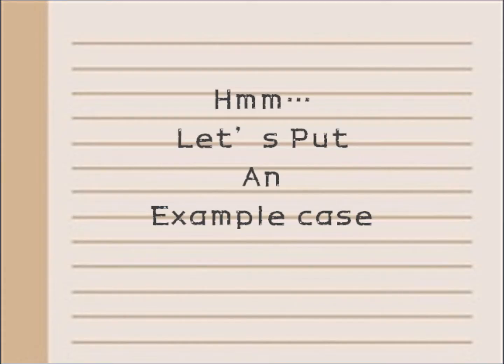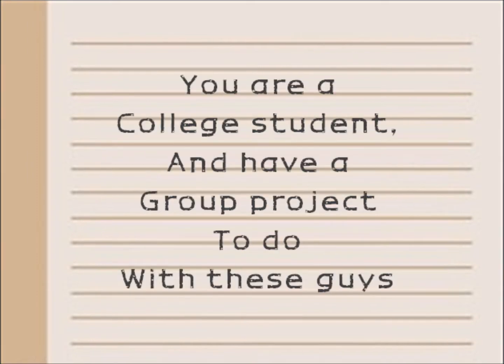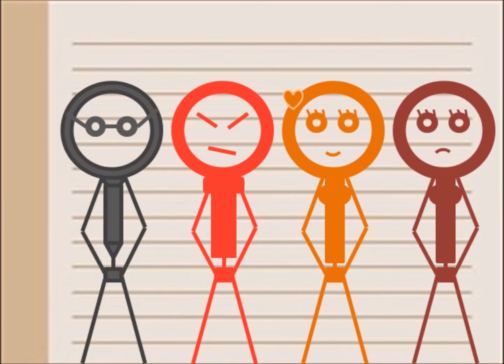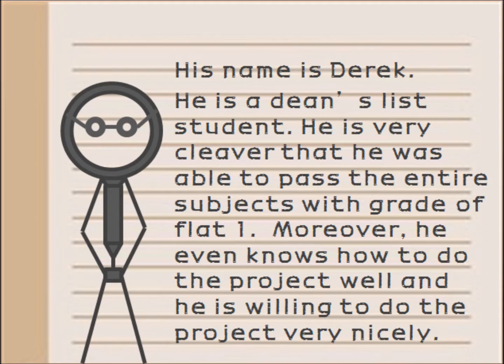Let's look at an example case. You are a college student and have a group project to do. His name is Derek. He is a Dean's List student — very clever, able to pass all subjects with straight A's. He knows how to do the project well and is willing to do it very nicely. Seems a bit nerdy, but a good kid.